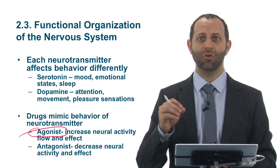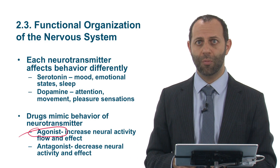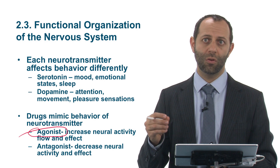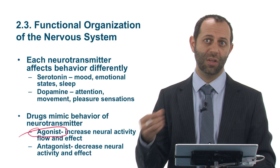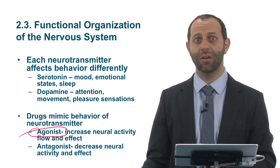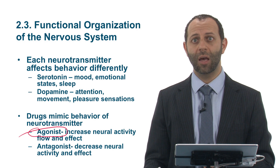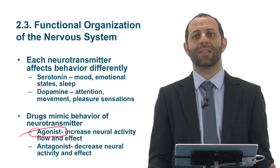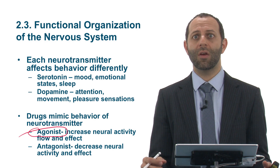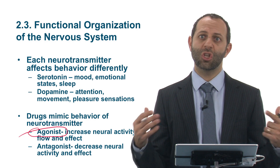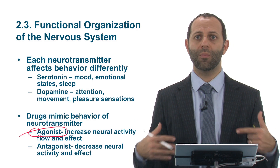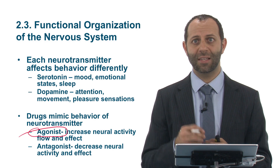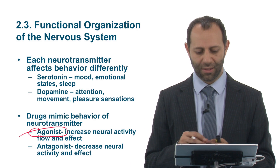There is a drug called curare — an ancient African chemical — which causes paralysis in the body. Curare shuts down the production of dopamine within the body, acting as an antagonist.